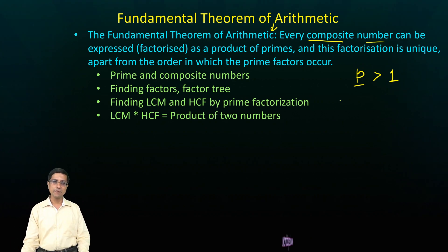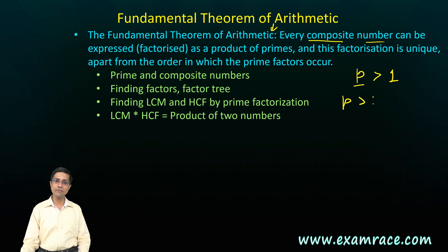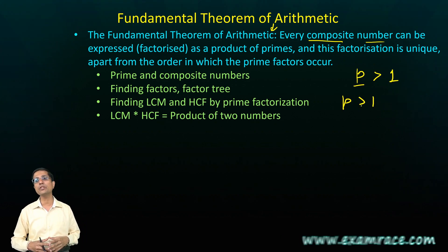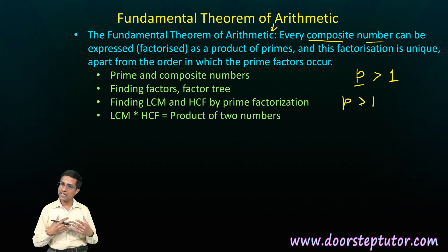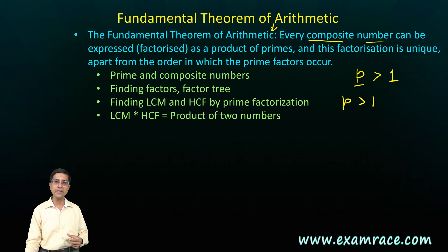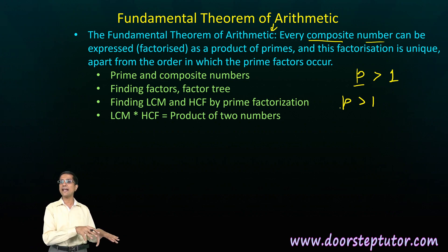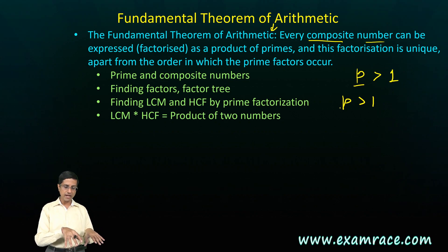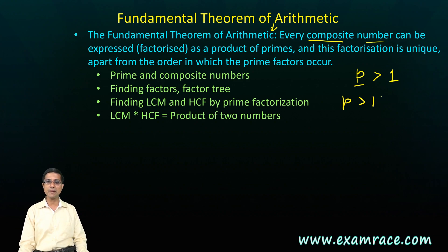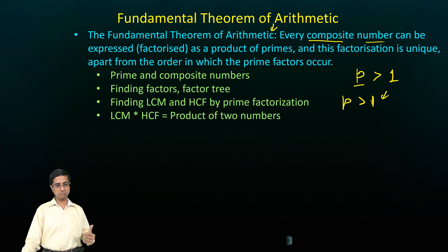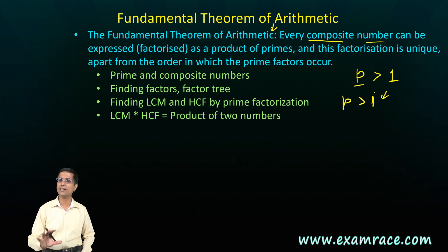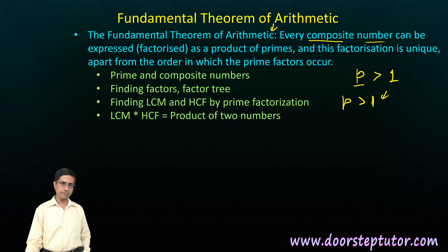Another definition: a prime number P is a number greater than one which cannot be written as a product of numbers other than one and itself. So if I have to write P as a product of numbers other than one and itself and I cannot, then that number is prime. The idea is simple — a prime number has no factors other than one and itself.